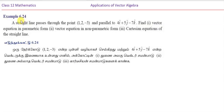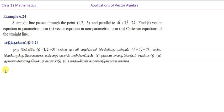Example 6.24: A straight line passes through the point (1, 2, -3) and is parallel to 4i + 5j - 7k. Find: first, the vector equation in parametric form; second, the vector equation in non-parametric form; third, the Cartesian equations of the straight line.